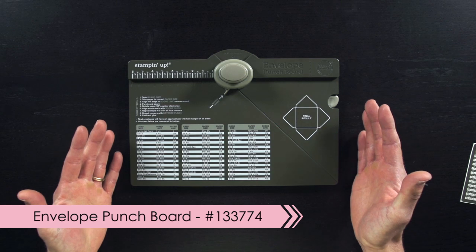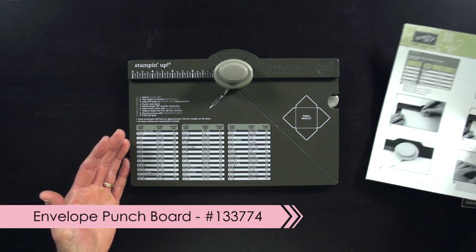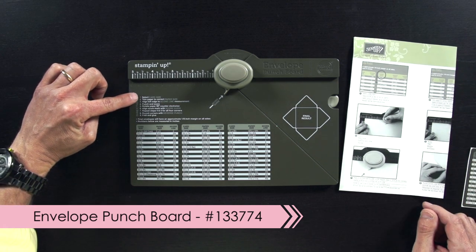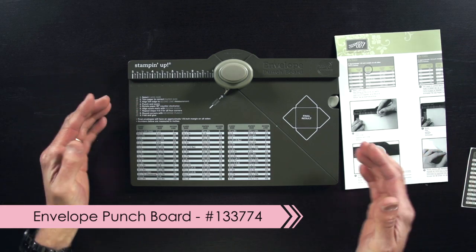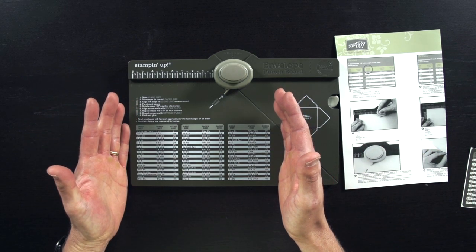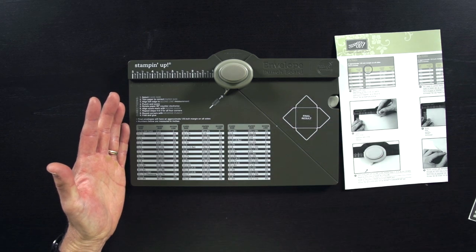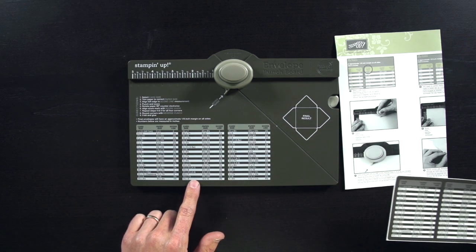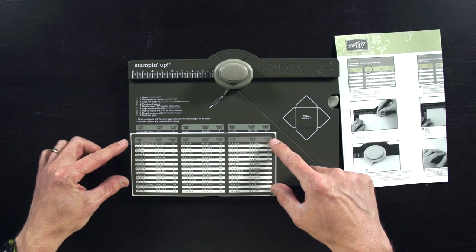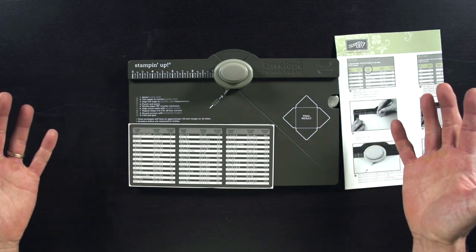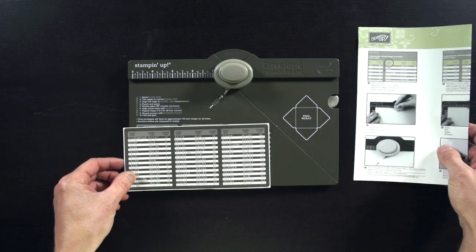It's really easy to use. You'll find when you get it that it comes with directions, but also there's a list of directions right here on the board itself. There are measurements for 66 different envelope sizes, and if you want to swap the imperial measurements that it comes with for metric ones, there's a sticker provided for you so you can make whatever sorts of measurements you want.